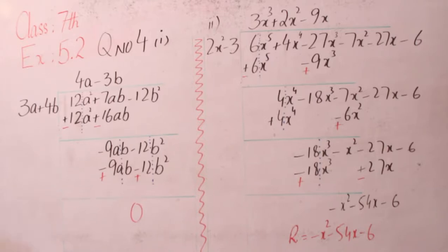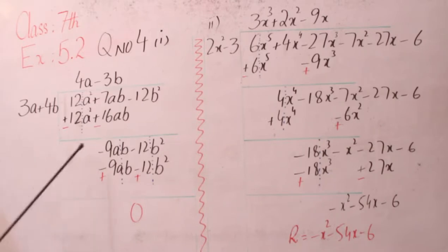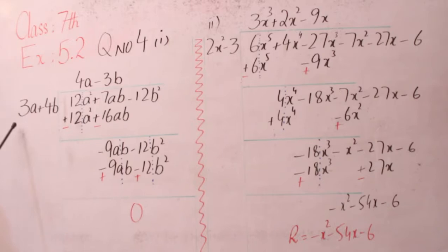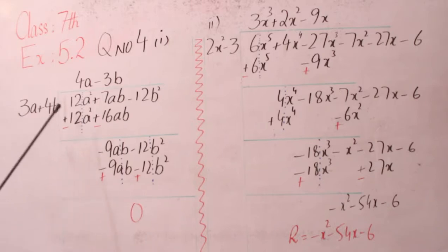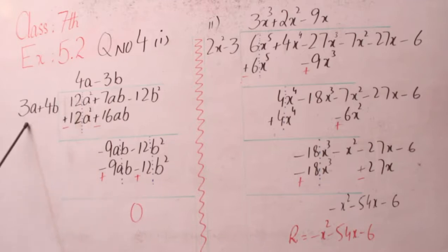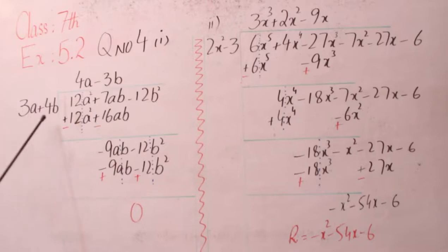وہی چیزیں جو پہلے lesson میں ہم نے کی ہیں: آپ نے first digit سے دیکھ کر first digit کو پورا complete کرنا ہے یعنی کہ پہلا sign، پھر coefficient، اور then variable۔ دیکھیں یہاں پر ہمارے پاس جو first value 12a² ہے اور یہاں پر 3a ہے۔ Sign plus کا ہے تو پہلی value میں plus چاہیے، sign ہم نہیں لگاتے۔